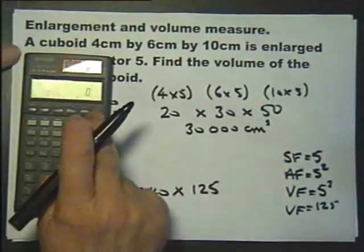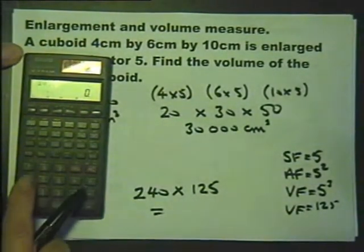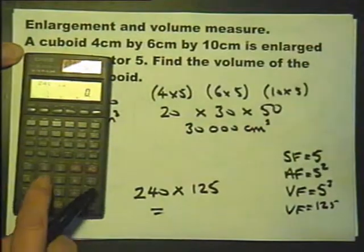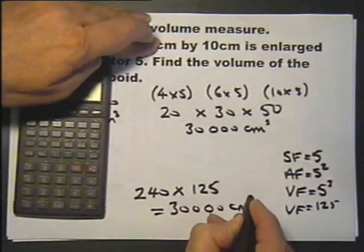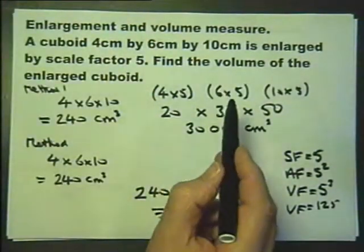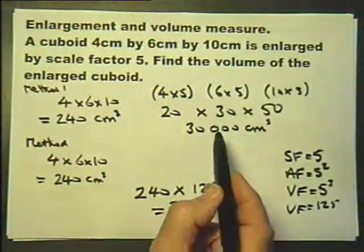Let's just check that: 240 multiplied by 125. We do. In an exam for this particular question, either method would be acceptable.